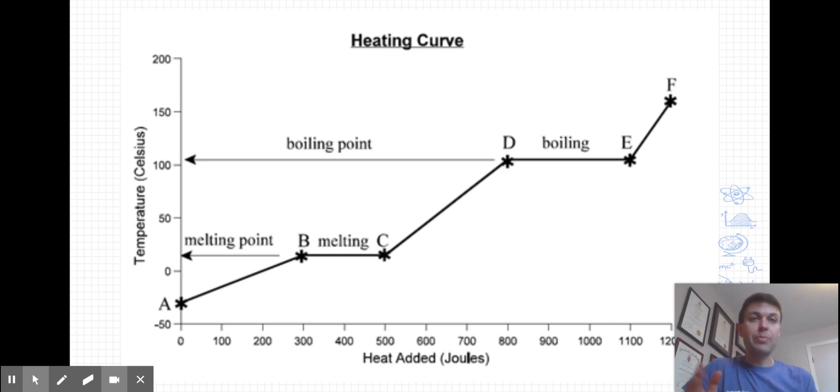At some point, and that's point B, the particles are vibrating fast enough that they're starting to overcome slightly some of the intermolecular forces. At this point, we define it as the melting point in which we are transitioning between a solid and a liquid.